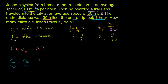Now we have two equations and two unknowns. Our whole goal is to find how many miles Jason traveled by train — we want to solve for dt. The easiest way to do this is to eliminate the distance by bicycle and solve for the distance by train.